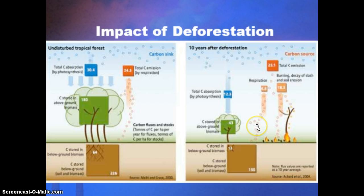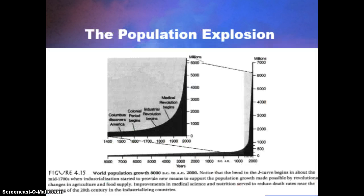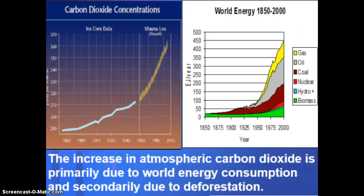Respiration and decomposition generally increase after deforestation because of all the dead matter being broken down, releasing more CO₂. We also often burn the remaining vegetation, adding even more CO₂ to the atmosphere. This is a tremendously destructive process. If you look at human population patterns, our population really starts jumping up around the Industrial Revolution, when we began using much more fossil fuel energy.